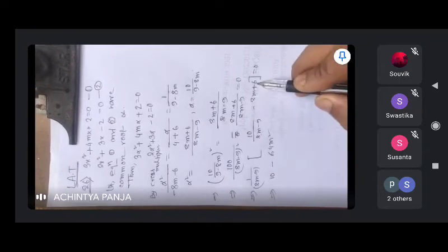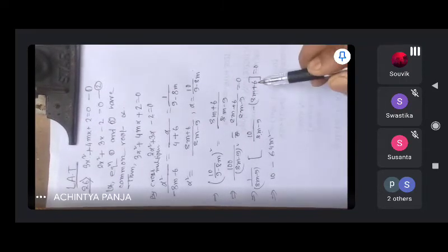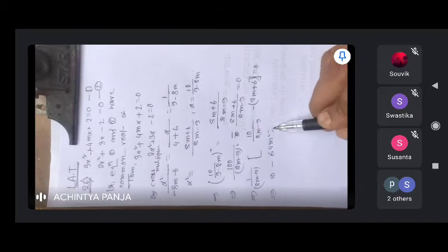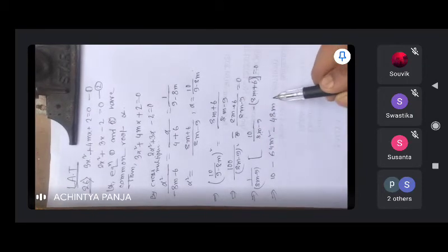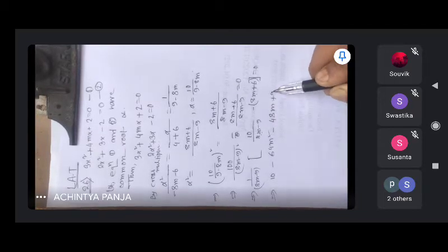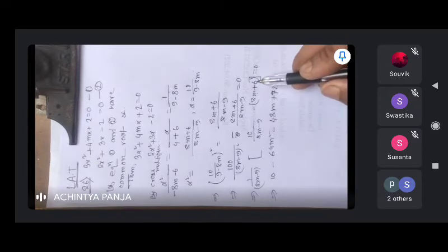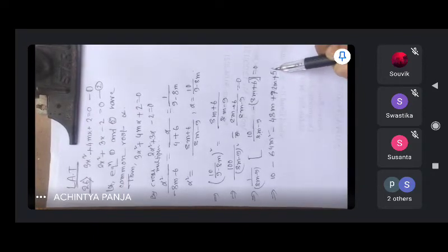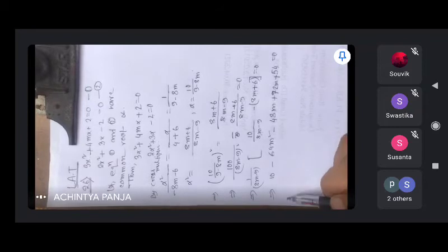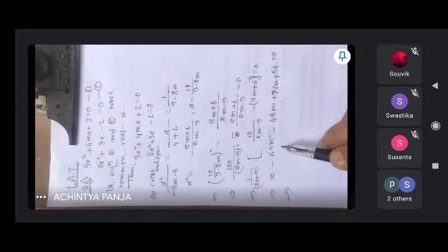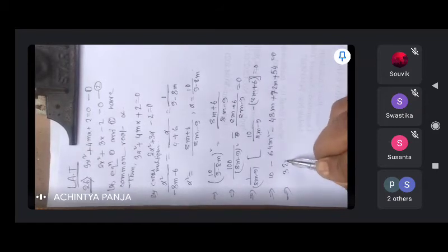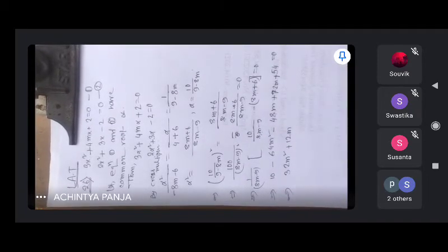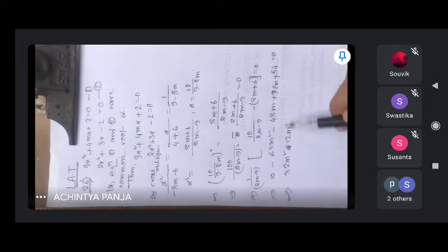64m square minus 16m minus 48m plus 72m.